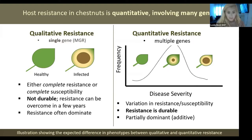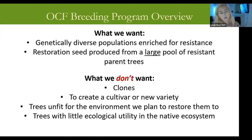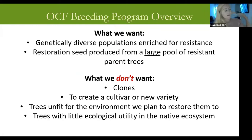So just a quick overview of our breeding program. What do we want? We want genetically diverse populations enriched for resistance, and we want restoration seed produced from a large pool of resistant parent trees. That's actually what we've been able to do - we've collected resistant material from all across the range of the Ozark Chinquapin. As you get closer to the epicenter, the origin of the range where the species actually migrated out, that's where you have the highest levels of genetic diversity and the most resistance.